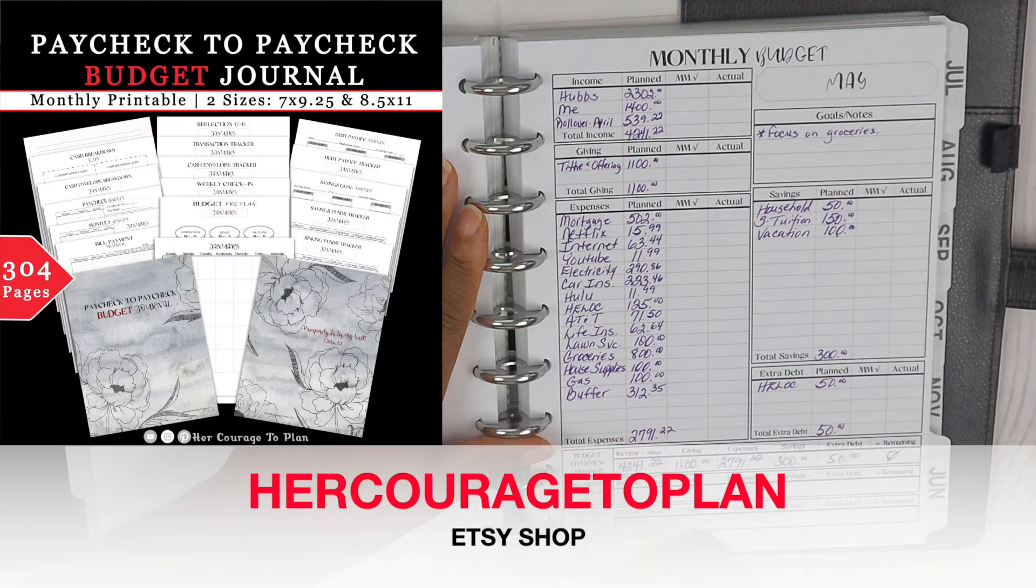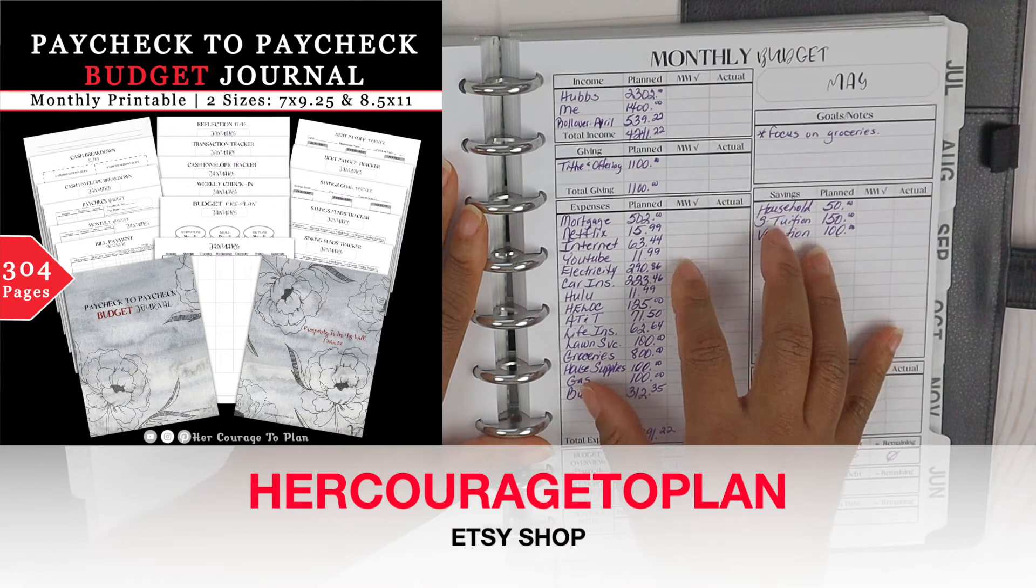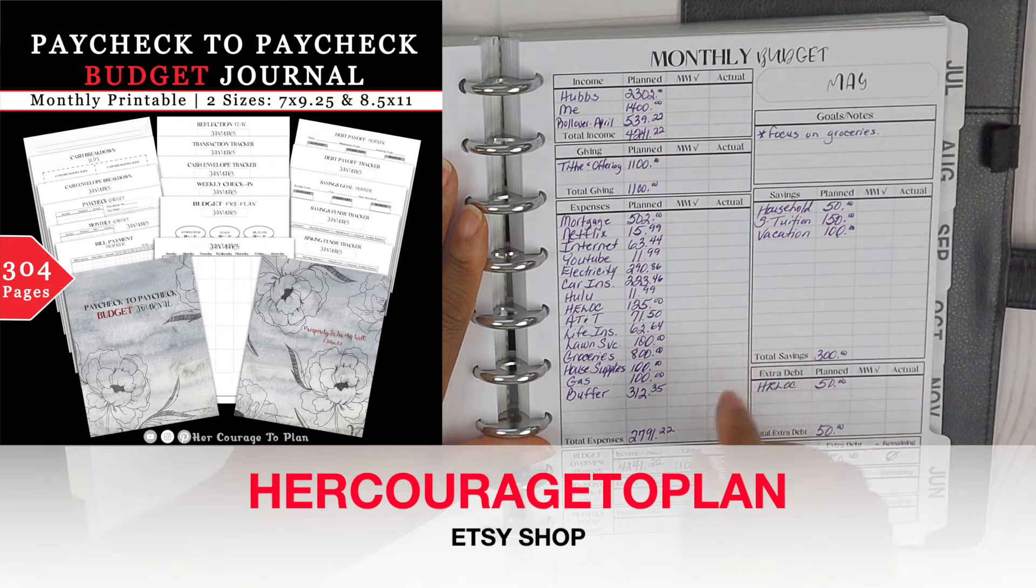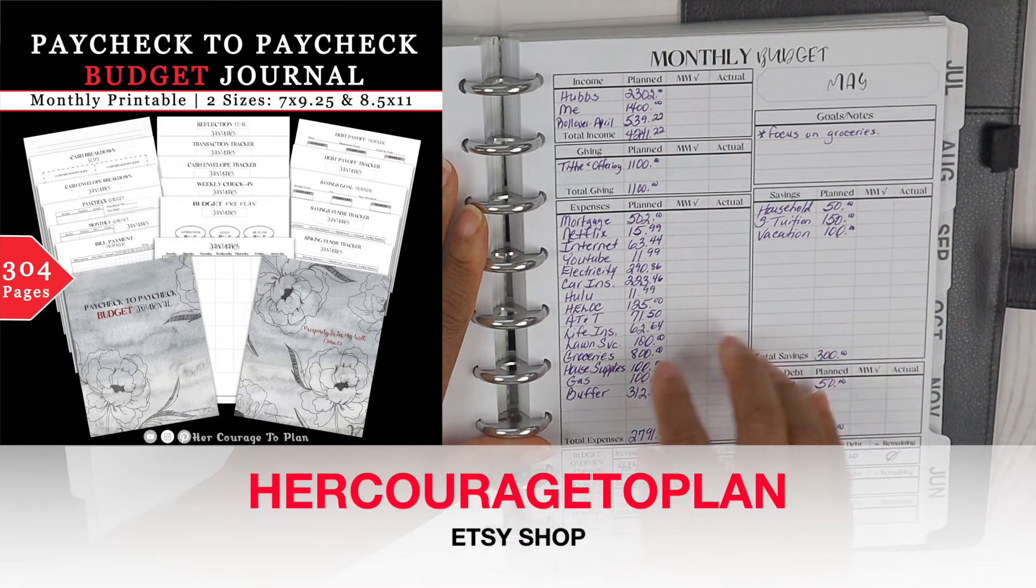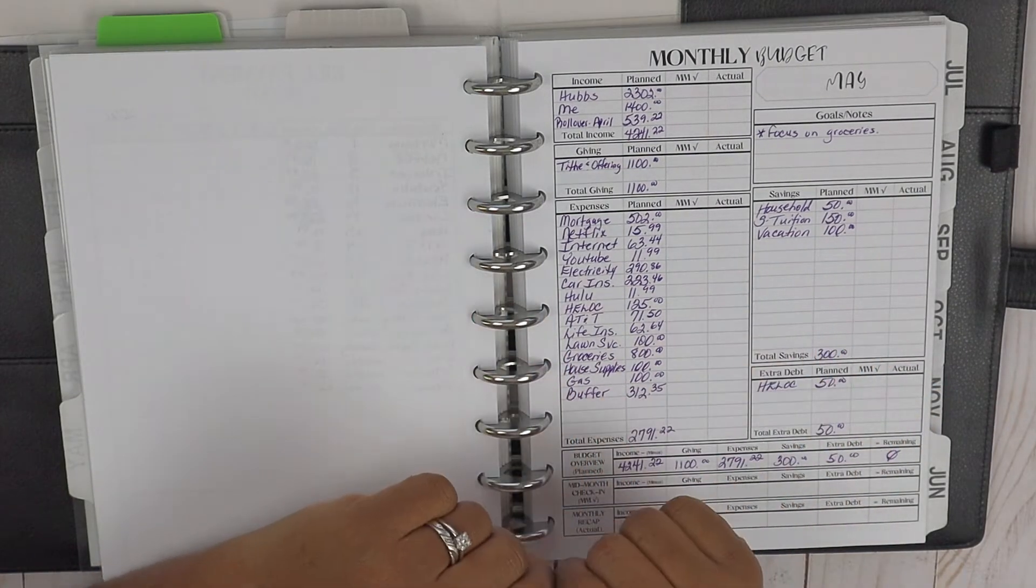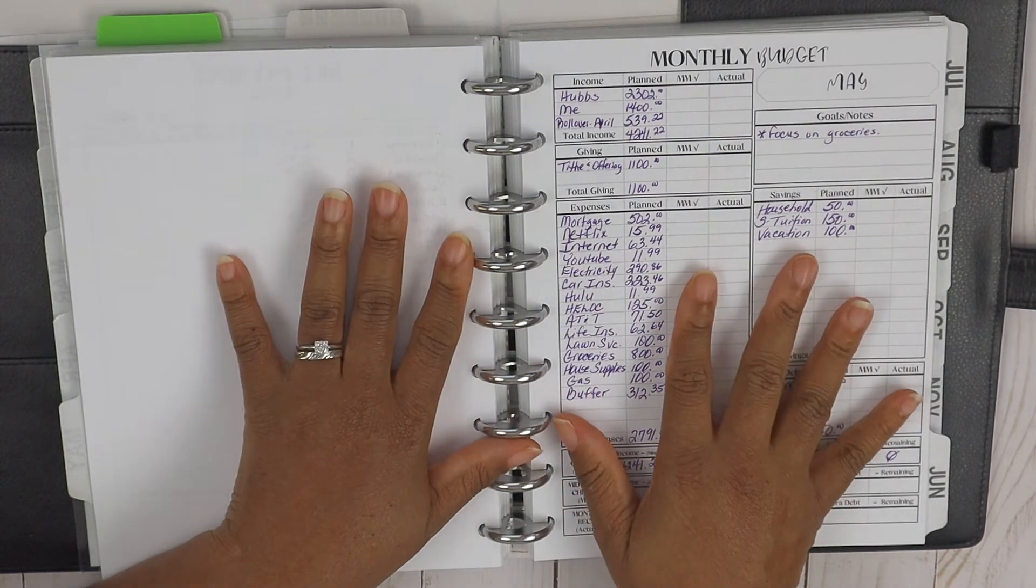And I also give you two different types of worksheets in your actual budget journal. You get the one with the savings section and you also get one where it has the savings and cash envelope section, so that just gives you a little bit of choice as part of your journal.